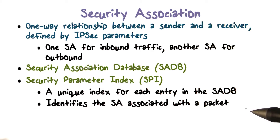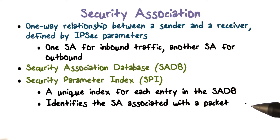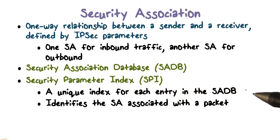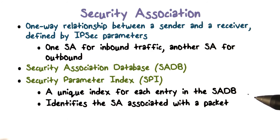When A and B agree on the security parameters, both sides will store the same SA to describe these parameters. The unique index for B's copy of the SA is sent to A, so that A can store this SPI in its SA. Then, when A processes the packet, it uses the parameters defined in this SA and also includes this SPI, so that B can unprocess the packet correctly.